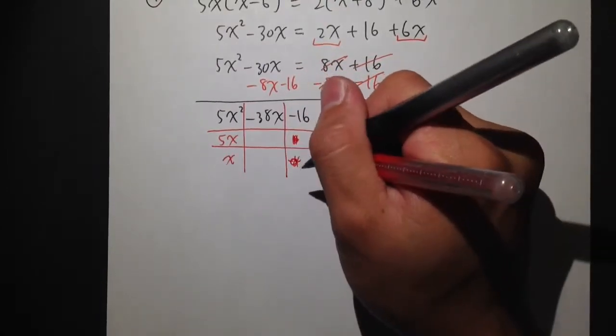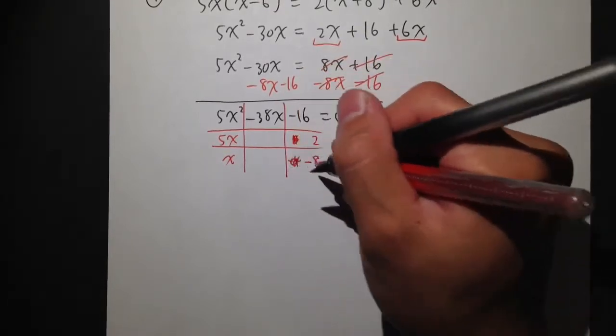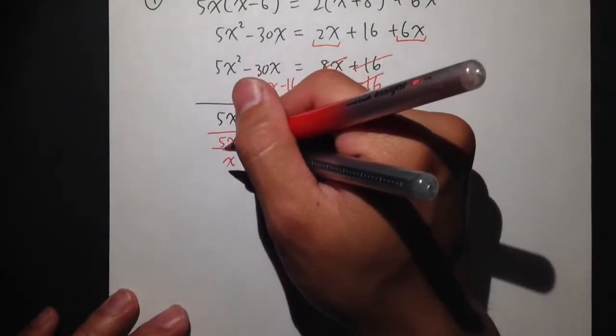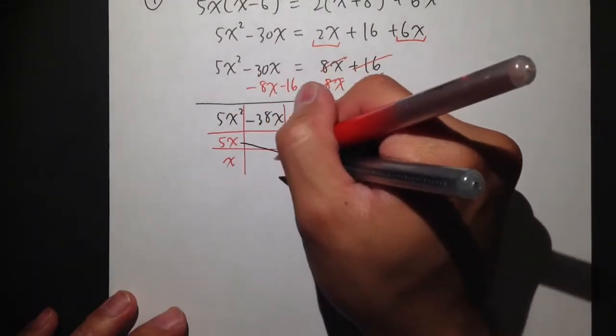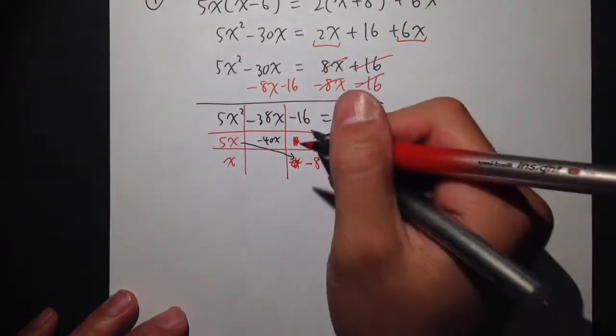I'm going to try with 8 and 2. But I need negative 16. So let me try negative 8 here. And the reason for me to try that is, so that I can try to have 5x times negative 8. That will be negative 40x.